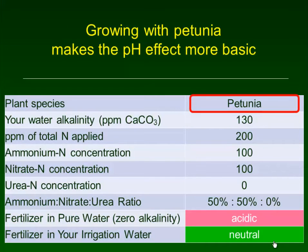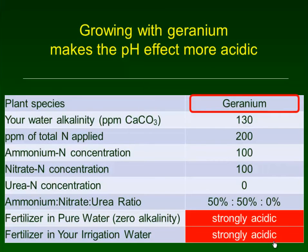If we change our species from impatiens to petunia, petunia is more basic. So with that higher fertilizer concentration and a lot of ammonium, even though it's going to be acidic, it's not going to be as acidic as with impatiens. We have an overall balance between the water alkalinity and the crop. But if we switch to geraniums, which really push pH down, a high fertilizer concentration with a lot of ammonium and geranium is going to push pH down and result in iron manganese toxicity issues.